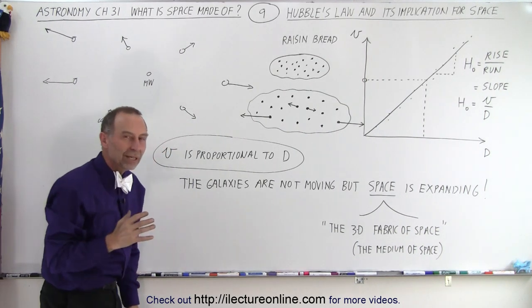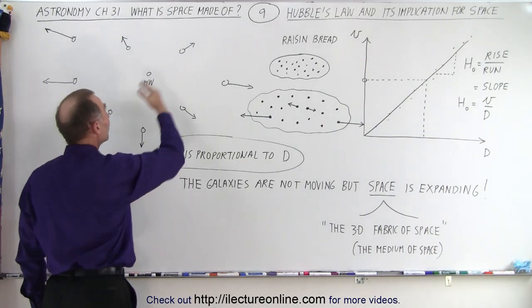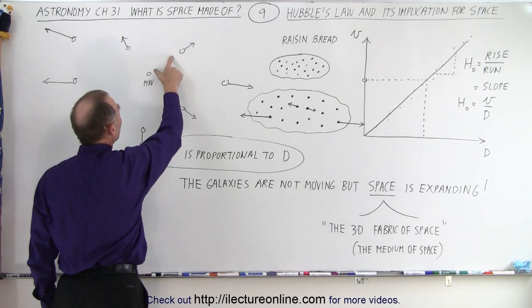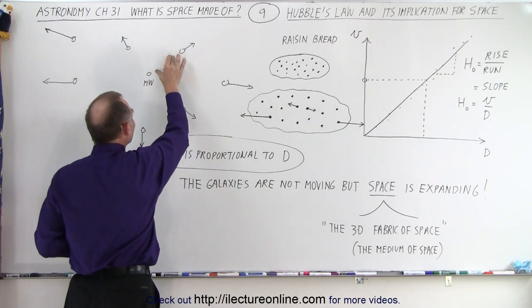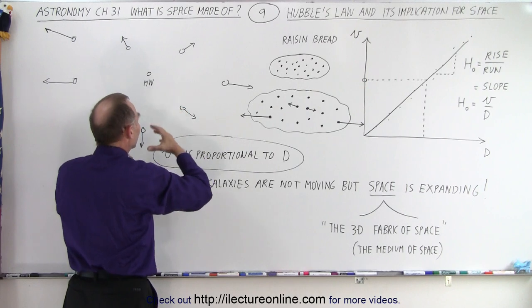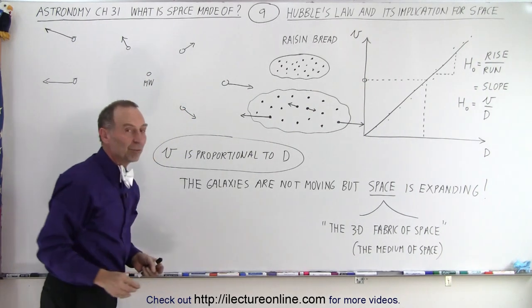And the same analogy was true for the whole universe. The galaxies were moving, but not because they're actually moving. They appear to be moving because the space in between is expanding. Just like the dough in the raisin bread, the space is actually expanding. And the more space is between galaxies, the faster the galaxies are moving away from each other.